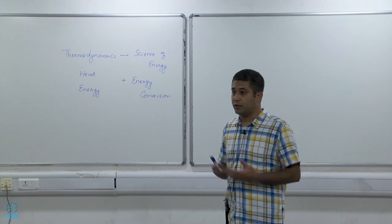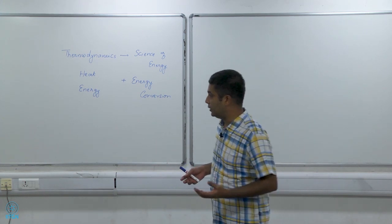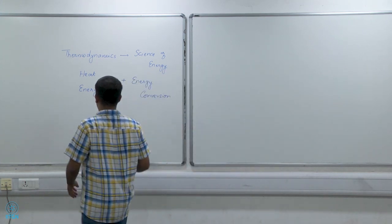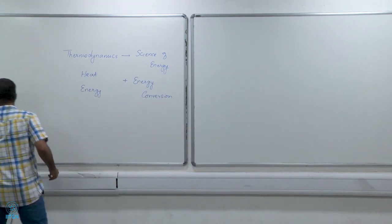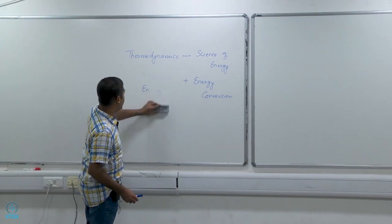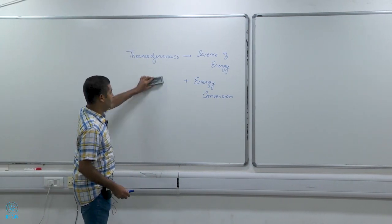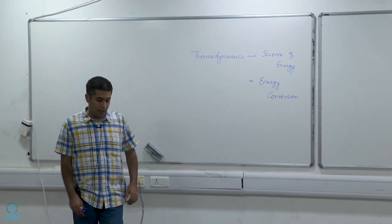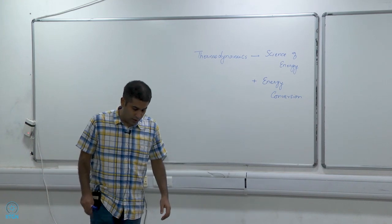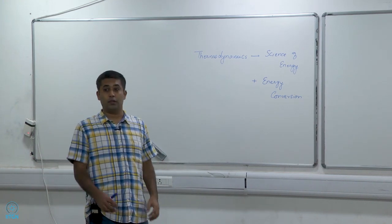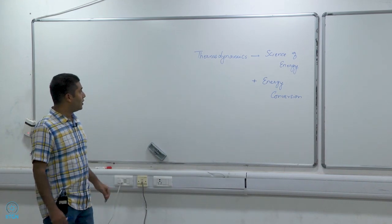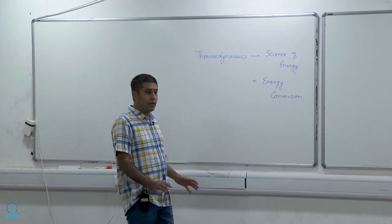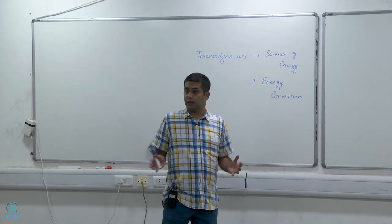Then slowly people discovered that thermodynamics is not just about heat and work, but also about different forms of energy. They also discovered that the laws of thermodynamics govern all kinds of conversions — not just heat to work, but also heat to chemical, chemical to heat, or chemical to electrical. So we would call it the science of energy and science of energy conversion. But what is this energy — what do you understand by energy?